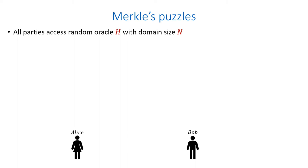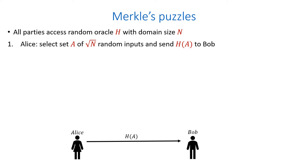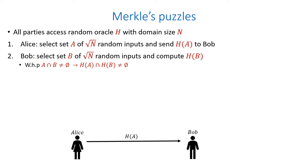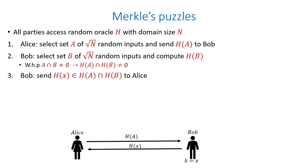Given access to the random oracle H, Alice first selects a set of square root of n random inputs, computes the set's image, and sends it to Bob. Bob then selects a set of his own and computes its image. By an argument similar to the birthday paradox, the sets of Alice and Bob intersect, meaning the image sets also intersect. Bob sends an image in the intersection of the image sets to Alice. Both players know a pre-image of this image and set it as their secret key. With high probability, this pre-image is the same for Alice and Bob.